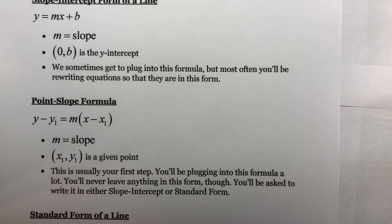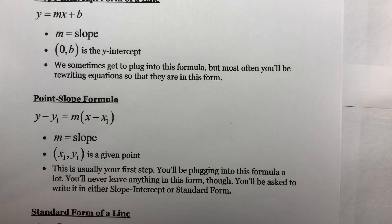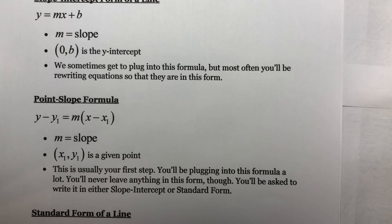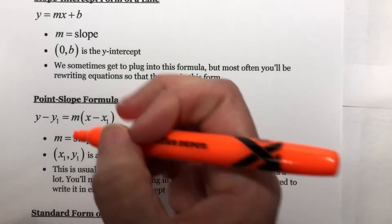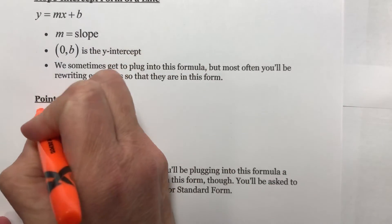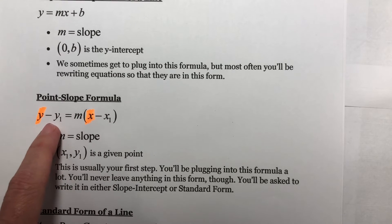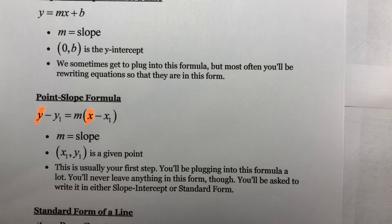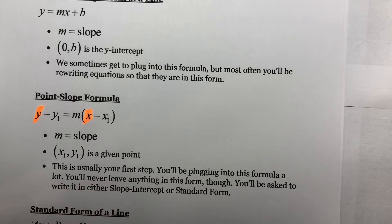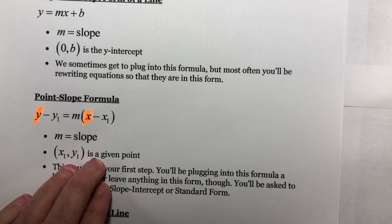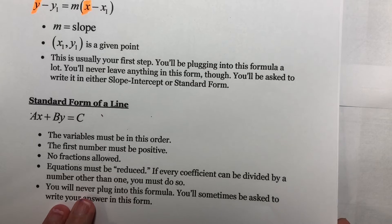When I learned this, the part that gave me trouble was I kept wanting to plug in something for x and y. But we have a regular x and regular y in the formula, and those are part of our answer. We don't plug anything into them. We only plug into x1, y1, and m. This is usually our first step, then we transform to slope-intercept or standard form when we simplify.